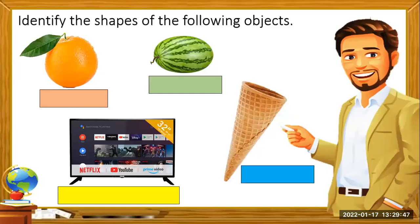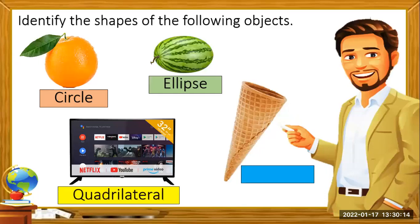Let's identify the shapes of some objects. The shape of an orange fruit is a circle — spelled C-I-R-C-L-E. The shape of a watermelon is an ellipse — spelled E-L-L-I-P-S-E. The shape of a TV is a quadrilateral — spelled Q-U-A-D-R-I-L-A-T-E-R-A-L. And the face of an ice cream cone is a triangle — spelled T-R-I-A-N-G-L-E.